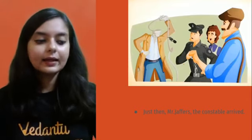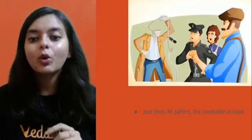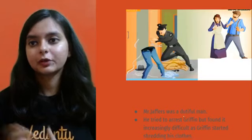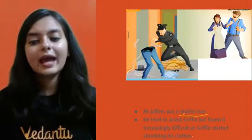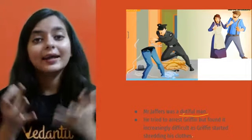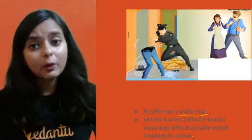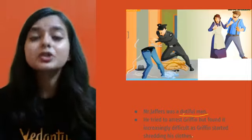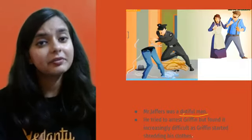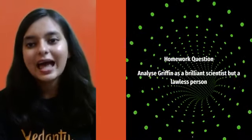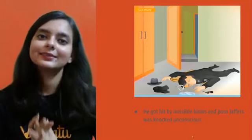Then Mr. Jaffers, the constable, arrived to arrest Griffin. Griffin started removing his clothes to become invisible, so Mr. Jaffers was receiving invisible blows and fists from here and there. He was determined to catch a man with or without a head, but when the invisible blows kept coming, the task became impossible. Poor Jaffers was knocked unconscious, and finally Griffin managed to escape.